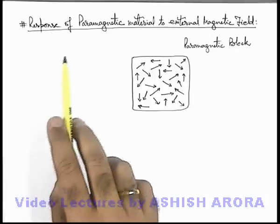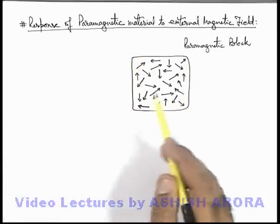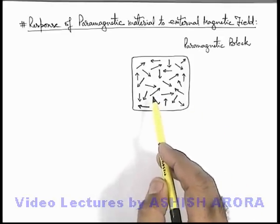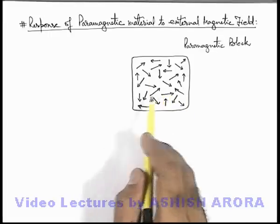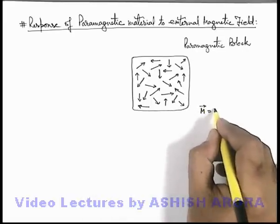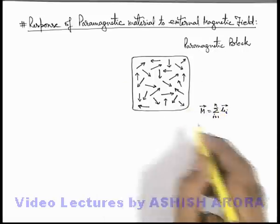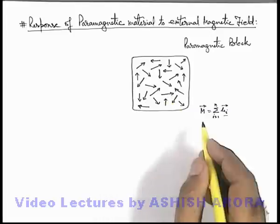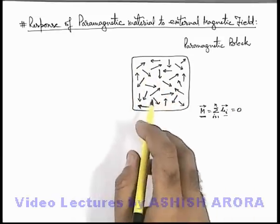Let us now discuss the response of a paramagnetic material to an external magnetic field. Here we can see a block of paramagnetic material in which all atoms or molecules have their individual dipole moments, but these are randomly scattered. So the total magnetic moment of the block, which we can write as summation of mu_i for i from 1 to n, is zero because individual dipole moments are randomly scattered.